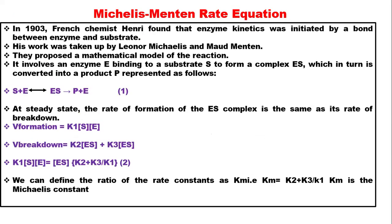When we look at the Michaelis-Menten rate equation, we cannot talk about enzyme kinetics without talking about Michaelis-Menten. In 1903, a French chemist found that enzyme kinetics was initiated by a bond between enzyme and substrate. His work was taken up by Leonor Michaelis and Maud Menten, who proposed a mathematical model of the reaction.